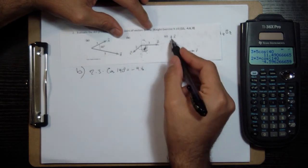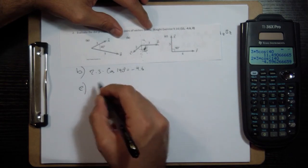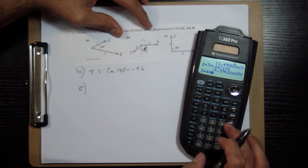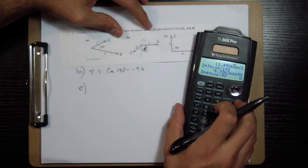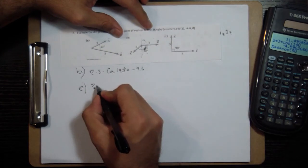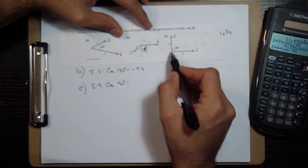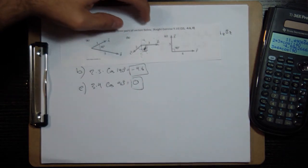And then for these two, you can do three times four times cosine of 90, which gives you zero. The dot product of any two vectors that are 90 degrees is going to be zero. All right, done.